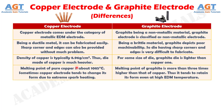Number 4: melting point of pure copper is about 1085 degrees Celsius. Sometimes copper electrode tends to change its form due to extreme spark heating. Whereas, the melting point of graphite is more than 3 times higher than that of copper, thus it tends to retain its form even at high electric discharge machining temperatures.